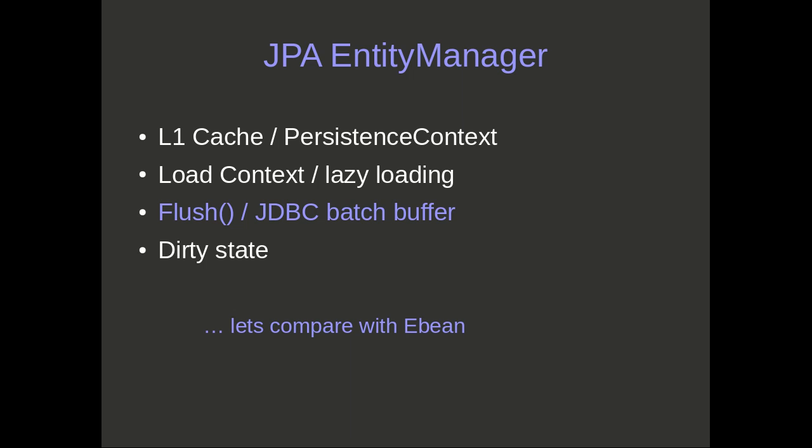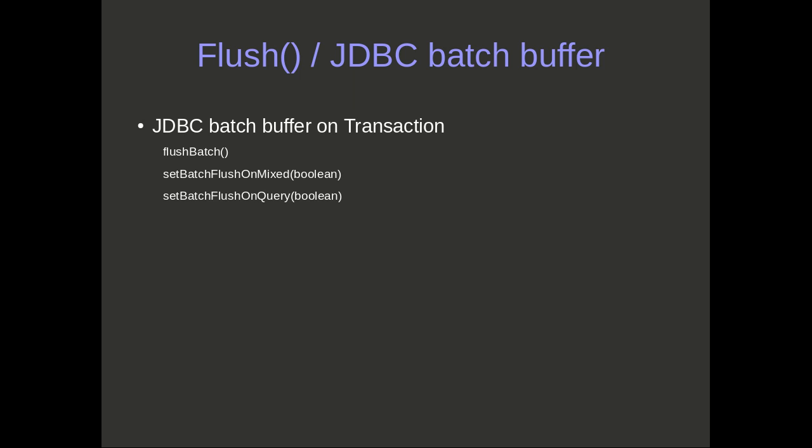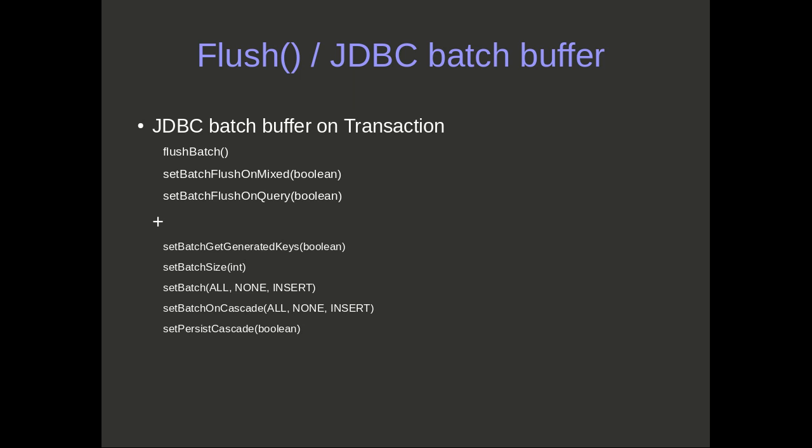Now let's look at flush and the JDBC batch buffer that sits underneath it. For eBean, the JDBC batch buffer is on the transaction. With Entity Manager you have flush and flush modes — you'll find those on eBean's transaction. We also have additional methods for controlling batch processing: you can turn off Get Generated Keys if doing lots of inserts and you don't need the IDs; you can control the batch size; batch mode is a global default but configurable per transaction; and you can turn off Persist Cascade when you want complete control, walking the object graph yourself. In short, flush and batch control is on the transaction.